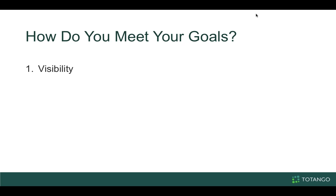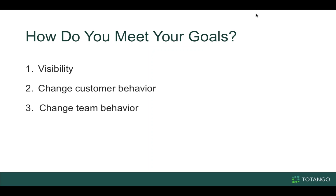How do you meet those goals? One is visibility, and we're going to talk through that today. You need to understand: how big is your product adoption problem? What segments of your customers are experiencing this problem — is it by region, is it the size of the customer? And then are you improving? Know where the problems are and then are you taking the right steps. You also need to change your customers' behavior — driving customers to use features relevant to their use case. And you need to change your team's behavior, focusing on the right customers and having the right conversations about goals.